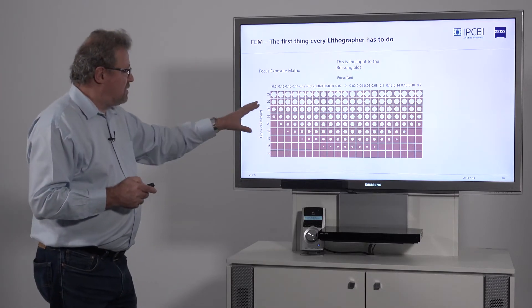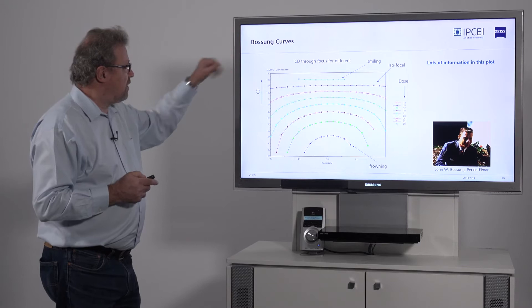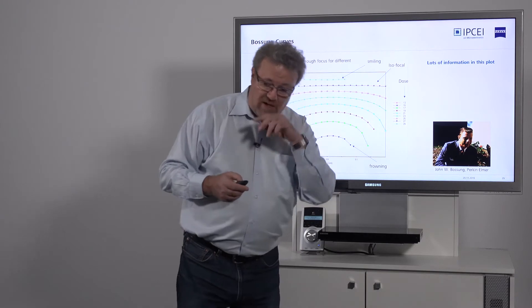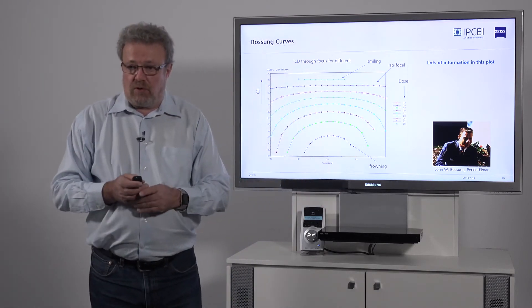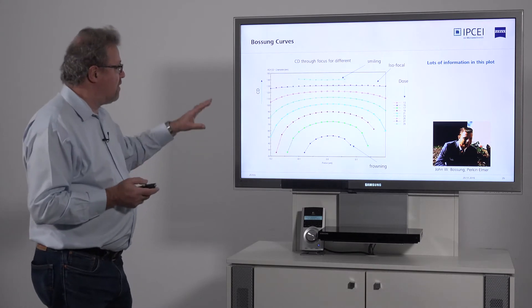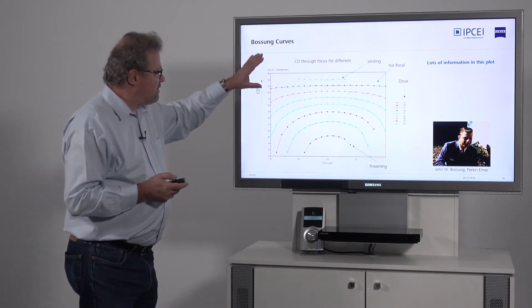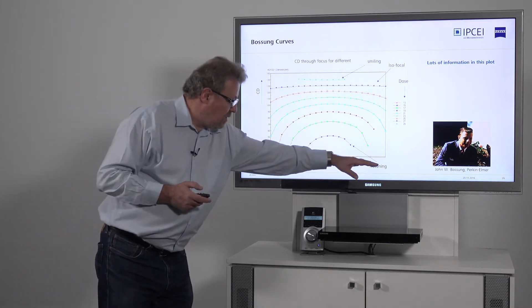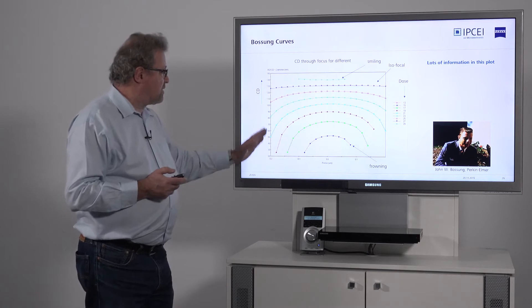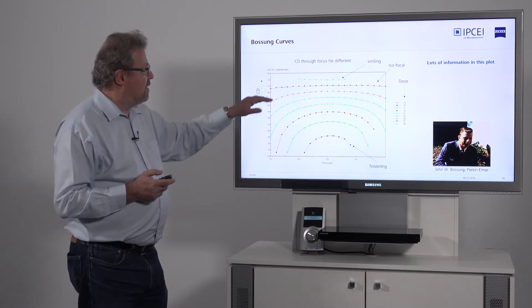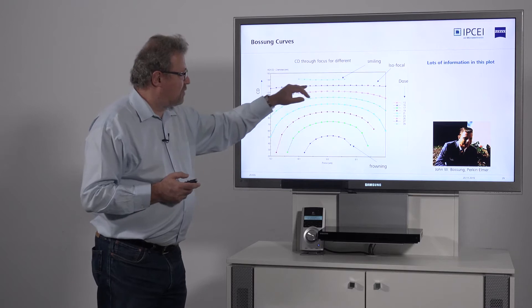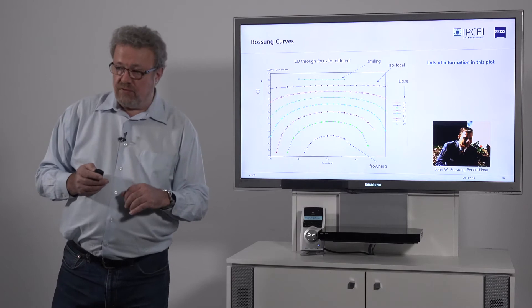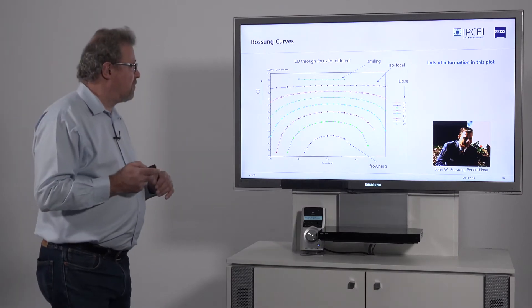then you can use these data. One way of representing them is the Bossung curve. Bossung was working at Perkin-Elmer, one of the early providers of lithography systems. Now you plot the focus on the X-axis and the CD on the Y-axis. For every dose, you can look at what your CDs are. This is a very useful way of representing data for a lithographer.